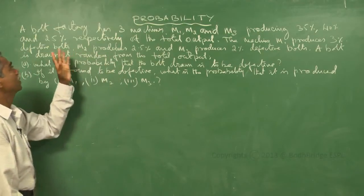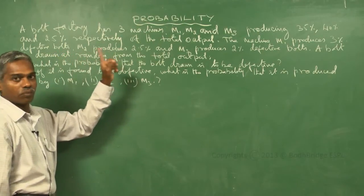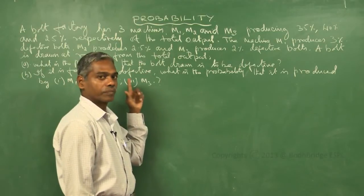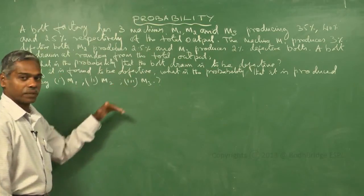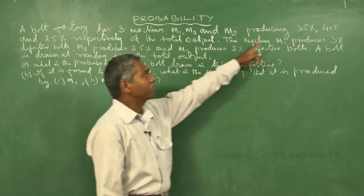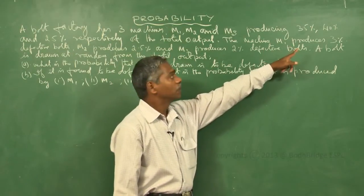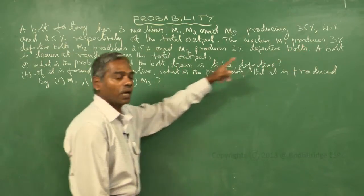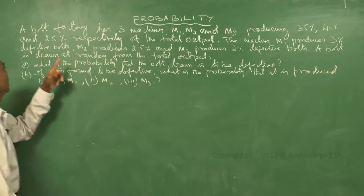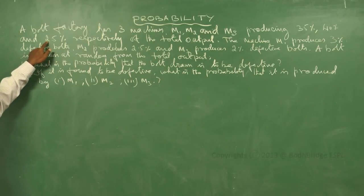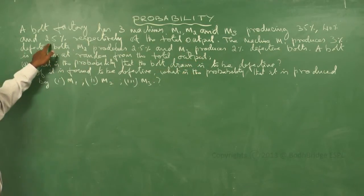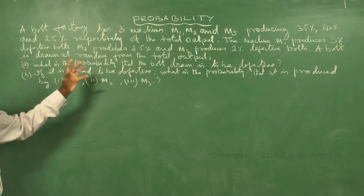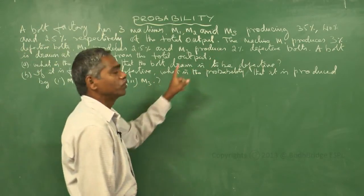In the factory there are 3 machines M1, M2, and M3. Out of the total output — that is 100% — M1 produces 35%, M2 produces 40%, and M3 produces 25%. Check: 35% plus 40% plus 25% equals 100%. These are the production capacities of the individual machines.